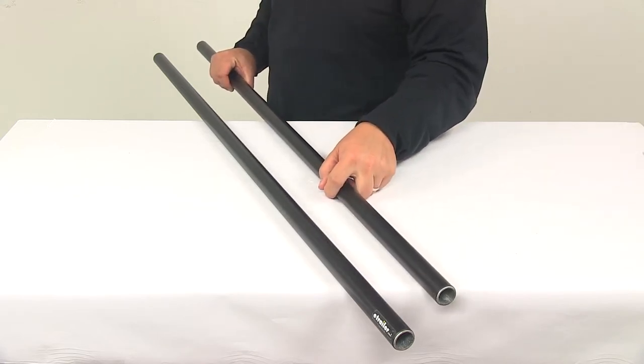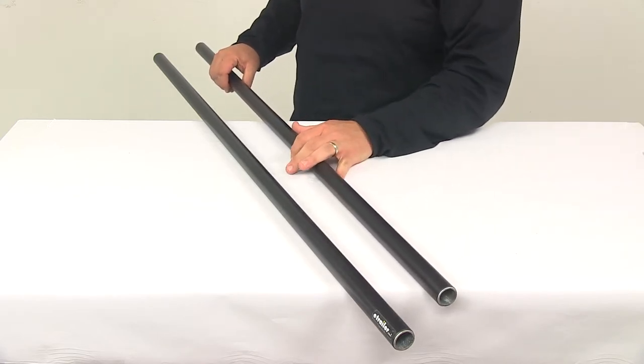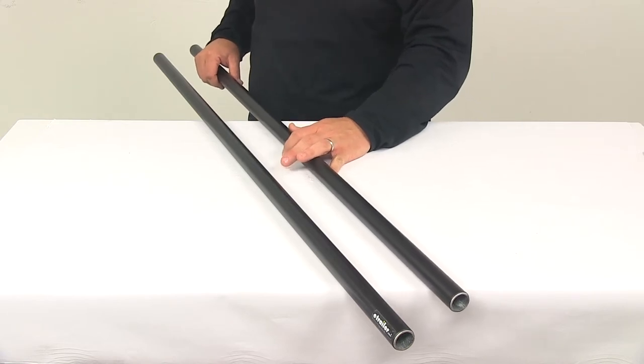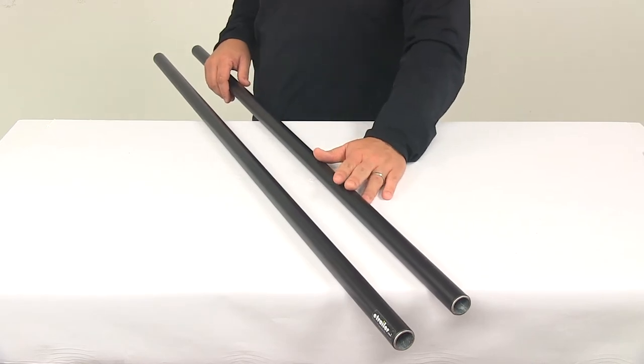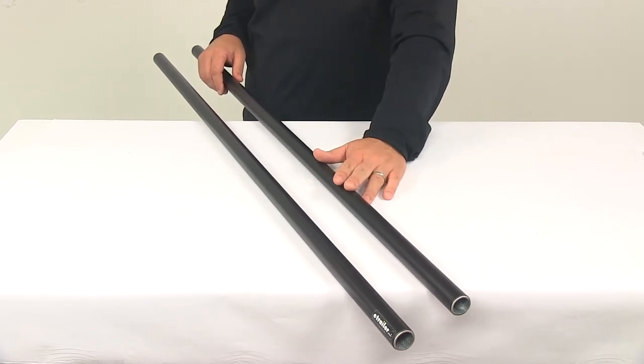At eTrailer.com we offer these bars in a variety of lengths to best fit your particular application. They are available in 48 inch, 58 inch, 66 inch, 78 inch, and 86 inch lengths.